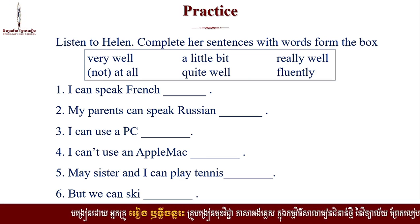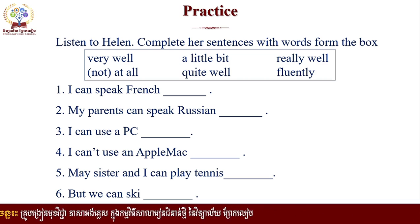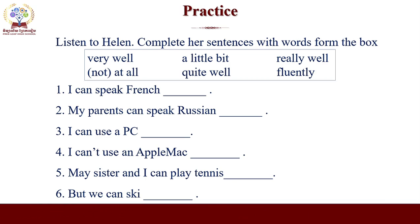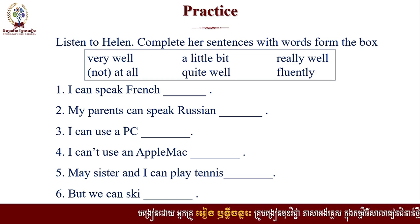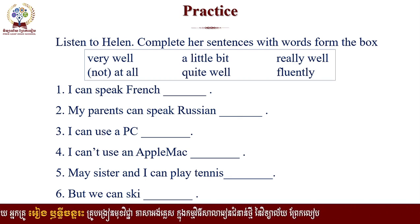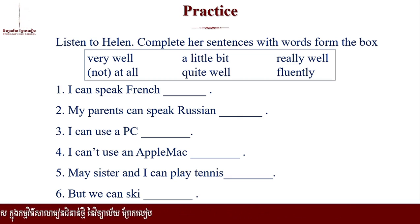Unit 11, Exercise 6. One: I can speak French quite well. Two: my parents can speak Russian fluently. Three: I can use a PC really well. Four: I can't use an Apple Mac at all. Five: my sister and I can play tennis quite well. Six: but we can ski really well.